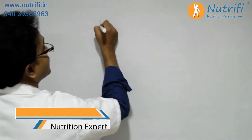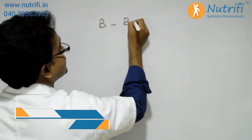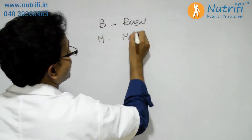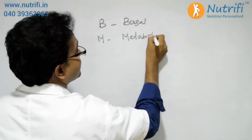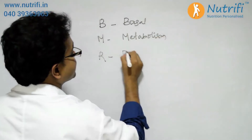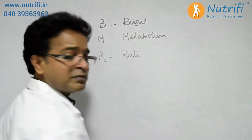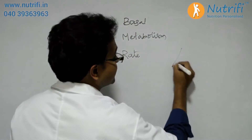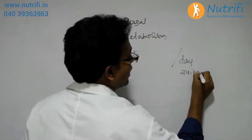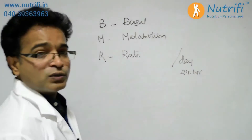BMR is an index of your metabolic activity in your body. BMR stands for B — basal, that is absolute rest; M — metabolism, that is the making and breaking of nutrients inside our body; R — rate, meaning anything divided by time, where the time here is one day, that is 24 hours.